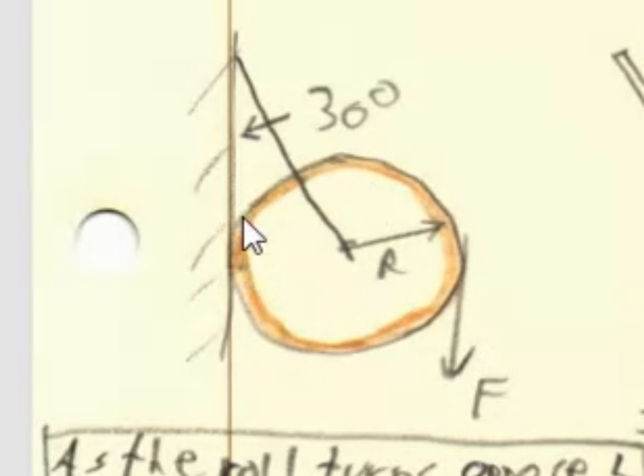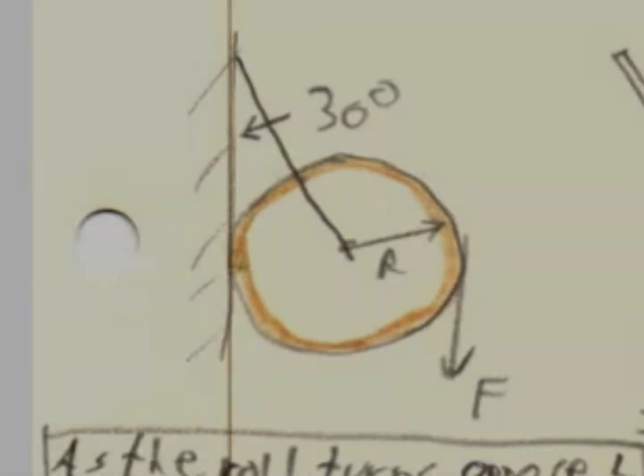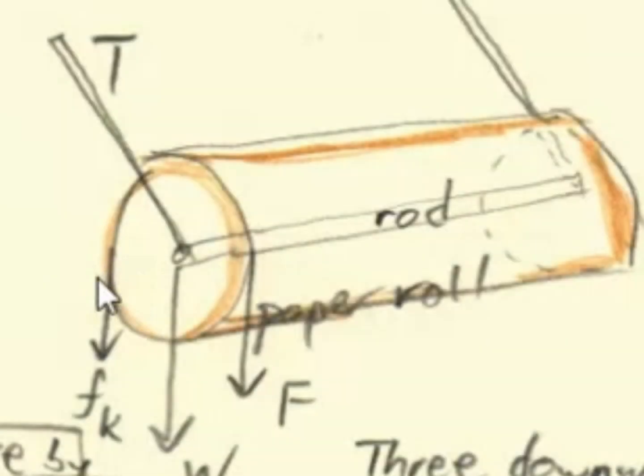According to Newton's third law of action and reaction, if there's a force, there's going to be a reaction force. As the roll of paper pushes against the wall, the wall is going to correspondingly apply a reaction force, and this reaction force shows up as a force of friction.